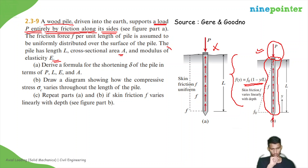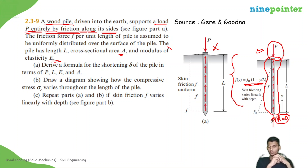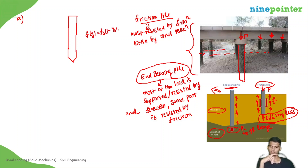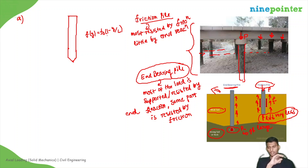So here the end reaction is zero. We need to find the shortening delta of the pile in terms of P, L, E, and A, and also draw the diagram showing how compressive stress sigma C varies along the length of the pile. Let us do the first part. F(Y) equals F0 times (1 minus Y/L). This is the friction force per unit length. The overall load is supported by friction itself.